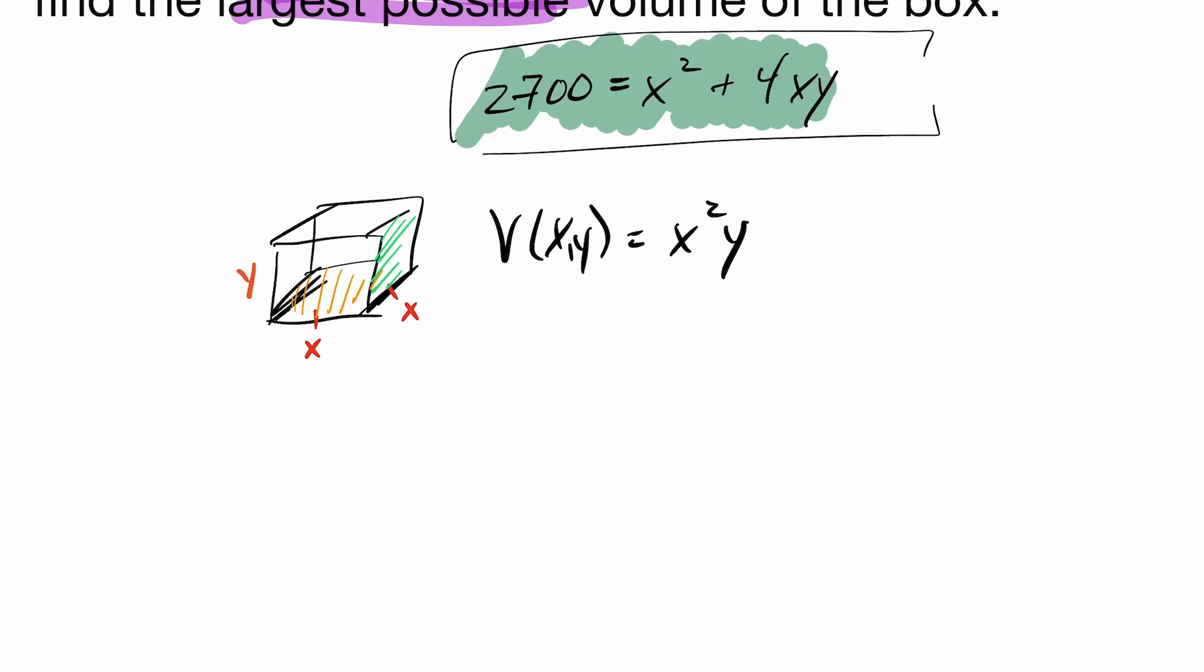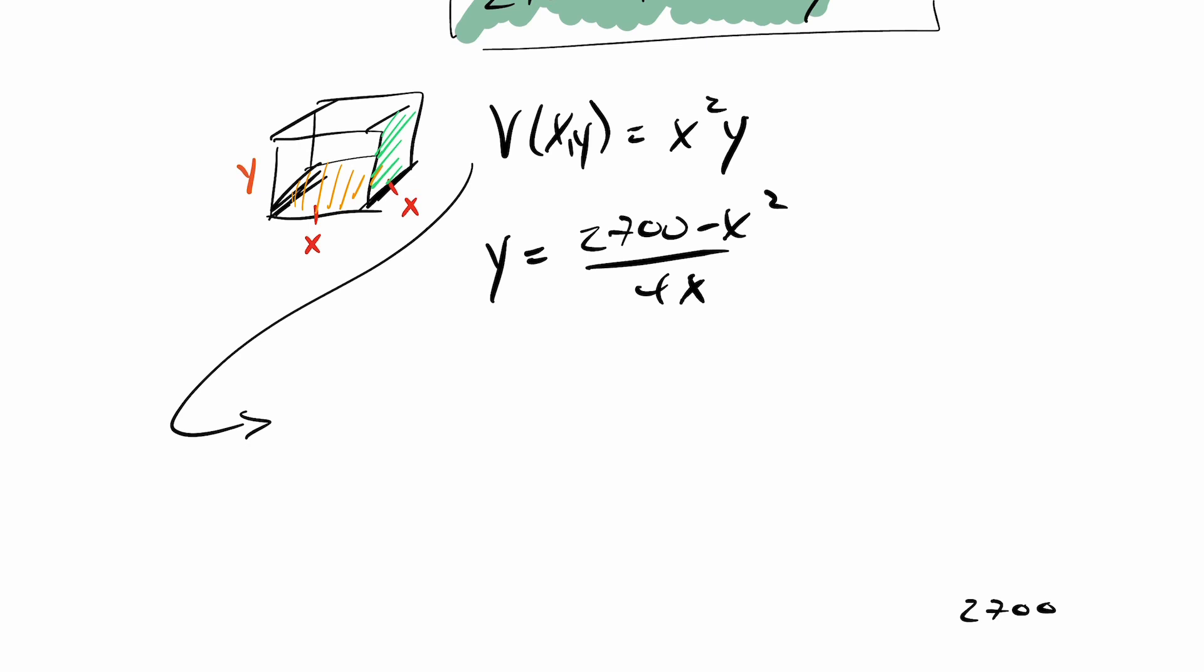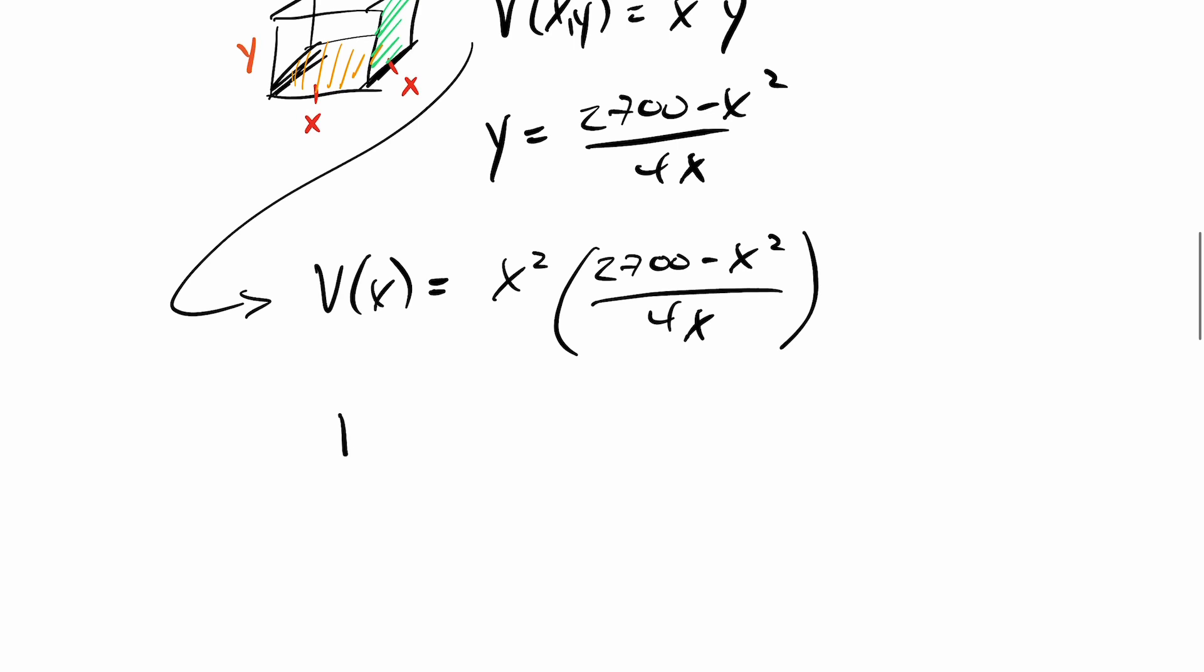All right, so I'm going to go to my constraint and isolate for Y. So I get Y is 2,700 minus X squared over 4X. I'm going to substitute that into my volume expression. So now my volume here is going to be V at X. Now I can get rid of one of the variables. I can get rid of this Y and change it to 2,700 minus X squared over 4X, which ends up being V at X equals 2,700 X squared minus X to the fourth all over 4X. And simplifying this, 2,700 divided by 4 is 675. This will be 675X minus X cubed over 4.